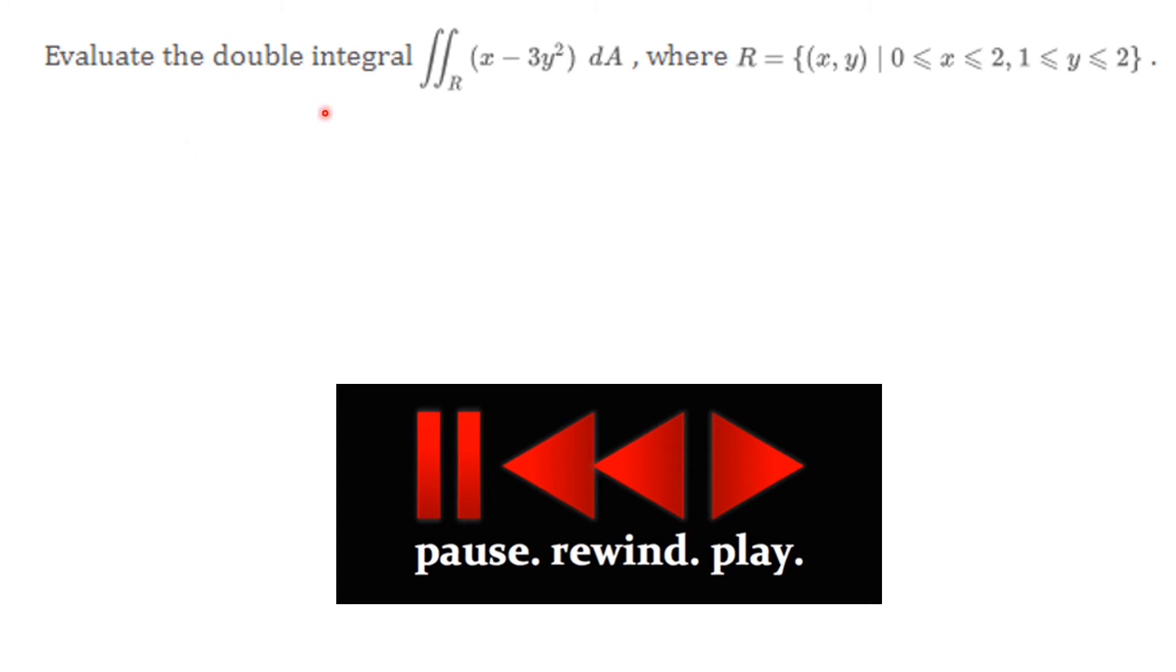Let's do another one. Evaluate the double integral over the rectangle R of X minus 3Y squared dA, where R is this rectangle that's given here. X runs from 0 to 2 and Y runs from 1 to 2. You know what to do.